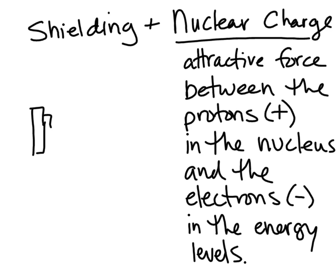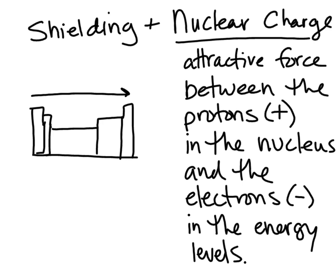So there's your periodic table. Your nuclear charge is going to increase as you go from left to right, because you're going to have more protons as you go from left to right. And it's going to increase as you go down, because you're going to have more protons as you go down a group. So nuclear charge increases going down a group and going from left to right.